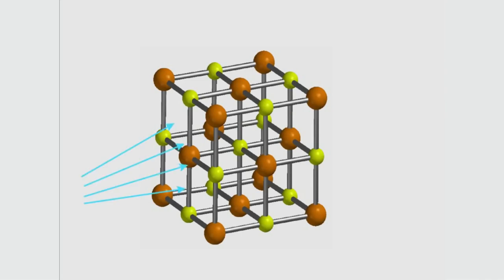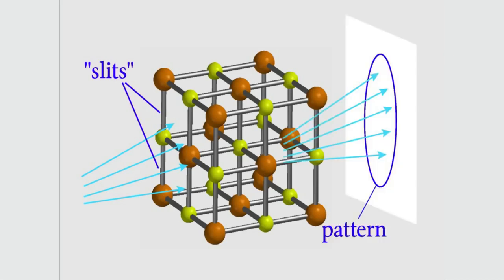The easiest way to have slits that close together is to shoot the electrons at molecules. The electrons will get blocked when they hit an atom, but they can pass between the atoms.